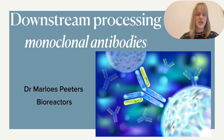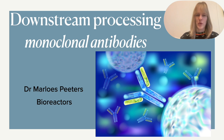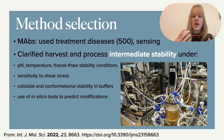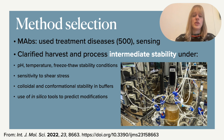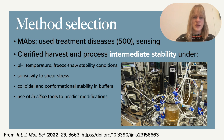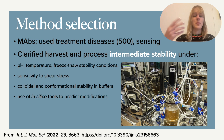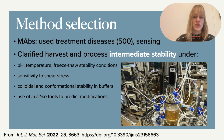Welcome to this second video on downstream processing in bioreactors. Today, rather than giving a broad overview, I'm going to give a very specific example talking about monoclonal antibodies. There have already been over 500 of them used for treatment of diseases. Antibodies are produced in your body when a foreign invader enters, and they also have various applications in sensing. There's a huge drive in the market to find more monoclonal antibodies, with scale-up happening particularly for autoimmune diseases — a very important aspect in the pharmaceutical industry.